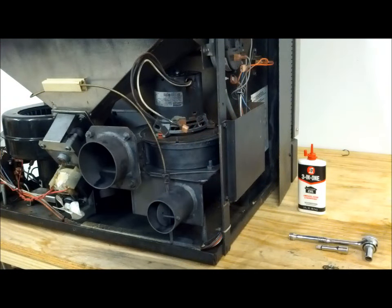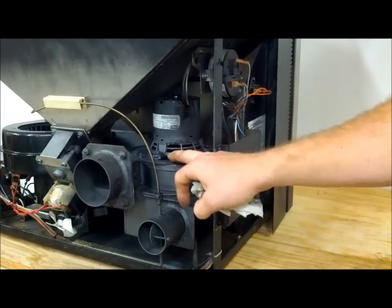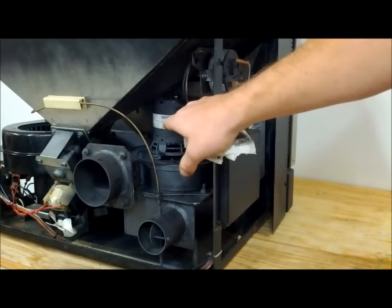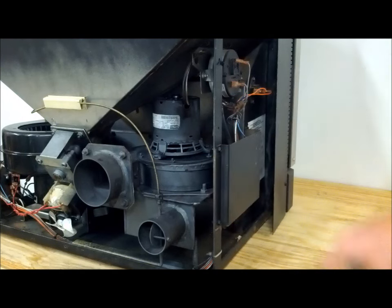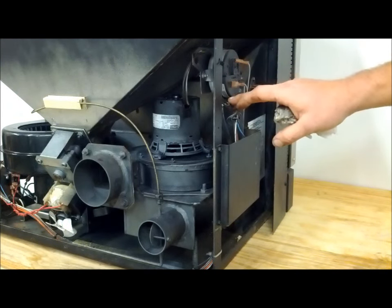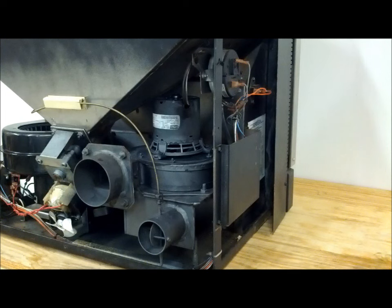Now that you've tightened those six nuts down that hold the motor to the exhaust housing, reconnect the two leads that give it power that you disconnected earlier. Once you've reconnected them, you're done. You've successfully cleaned and lubricated your exhaust fan on your pellet stove, and it'll keep it running smooth for the next heating season.